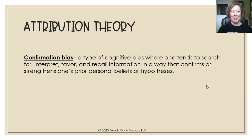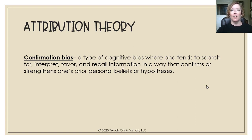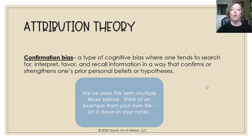Confirmation bias is also related to attribution theory. This is a cognitive bias where one tends to search for, interpret in certain ways, favor, and recall information in a way that confirms or strengthens one's prior personal beliefs or hypothesis. For example, if you really believe that coffee is good for you, you'll look for research that supports that and kind of push past research that states it's not. Think of an example from your own life and jot it down.